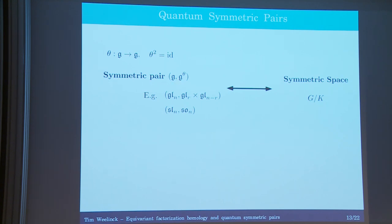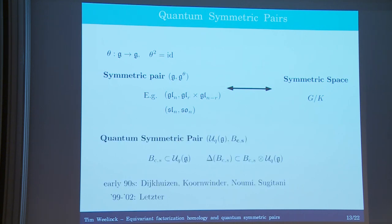Interestingly, it turns out it doesn't quantize to a sub-Hopf algebra of the quantum group — it's slightly more subtle. What you find is that you can indeed quantize these, as done in the work of various people, but the sub-algebra B that quantizes U of g-theta is actually a co-ideal sub-algebra. We'll get back to the relevance of this later.